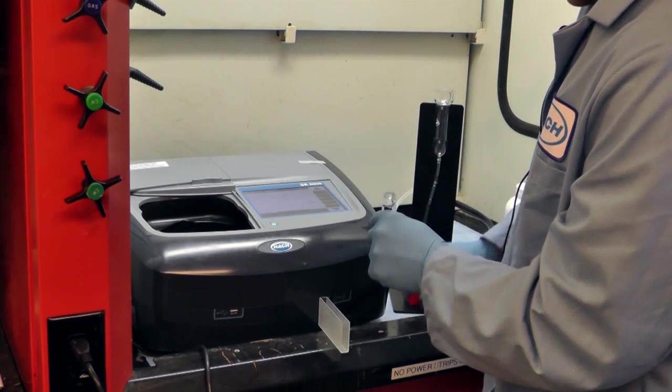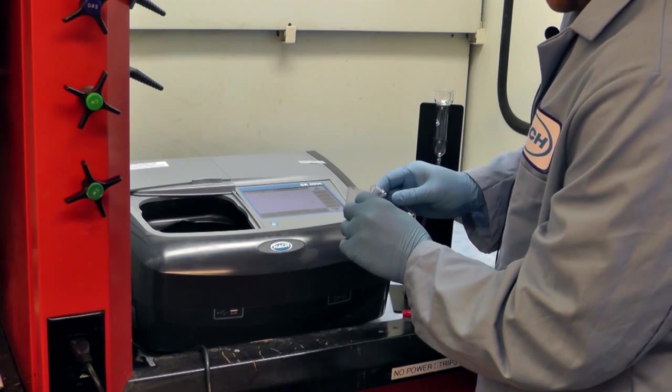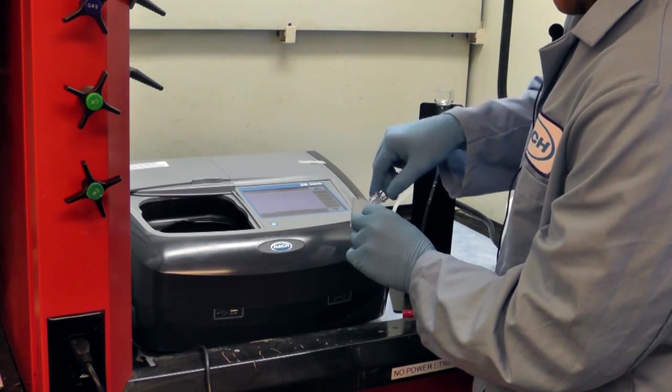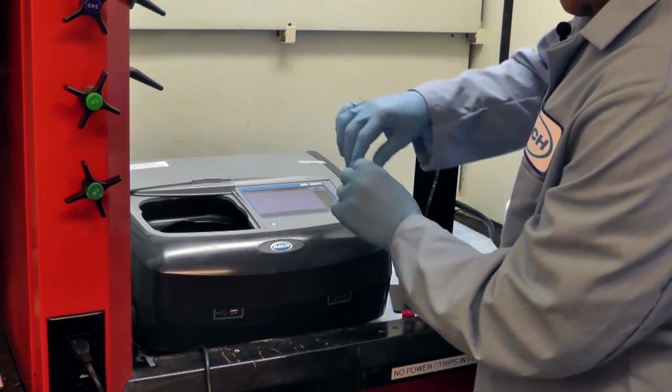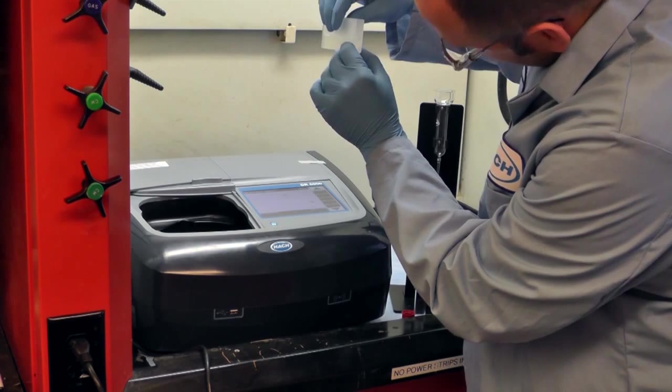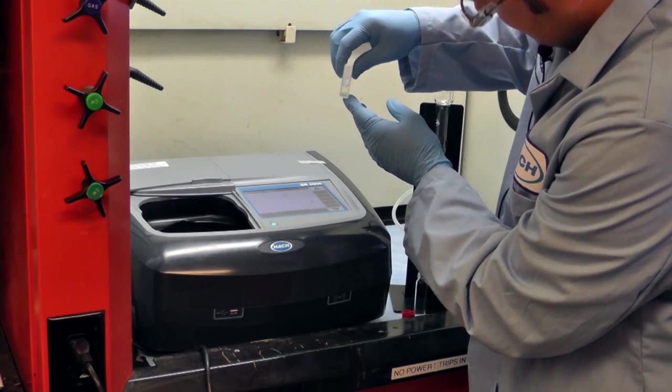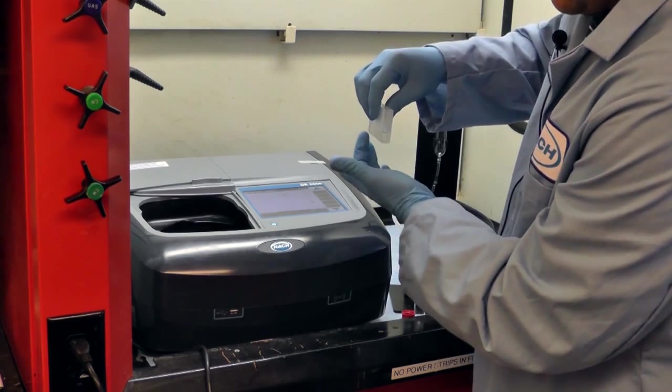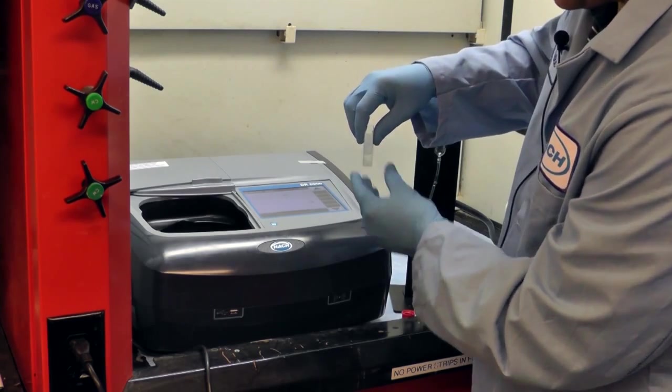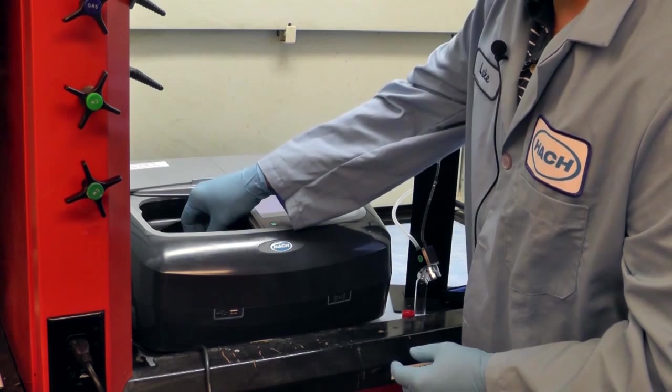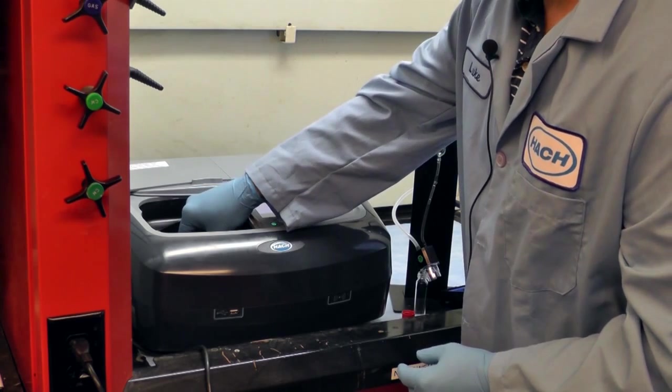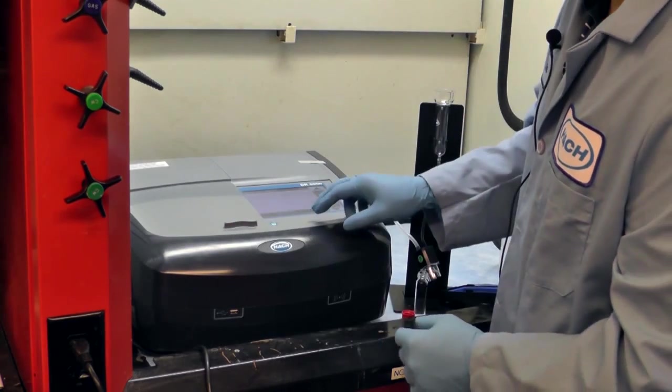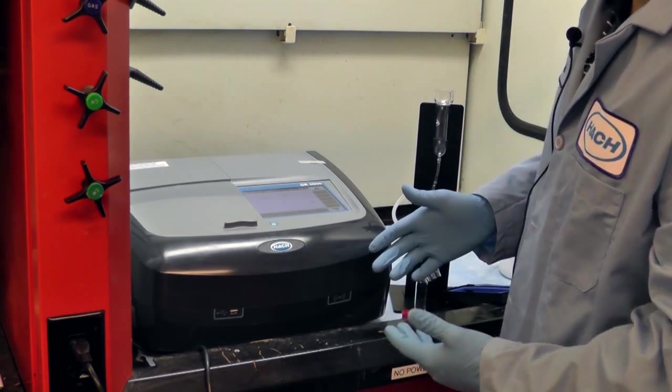So back to this. I'm opening the vial in the hood. I'm going to transfer it carefully into the 10 centimeter cell. I'm going to make sure that there are no bubbles in the path there. I've already wiped both windows of this cell to make sure that there are no smudges. I'm going to place this in the spec, making sure that it's aligned in the proper direction. Close the lid and I will zero on this as my blank.